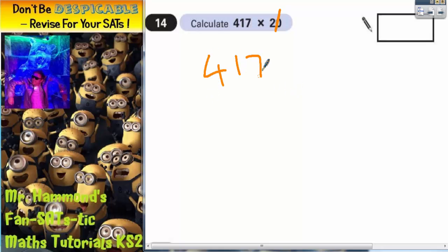So let's do 417 times by 2. 2 times 7 is 14, put your 4 in, carry your 1. 2 times 1 is 2 plus that 1 is 3, and 2 times 4 is 8. So 2 lots of 417 is 834.